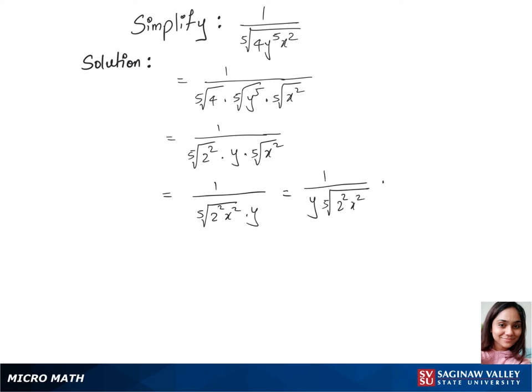And we are rationalizing this denominator by multiplying 5th root of 2 power 3 times x power 3 over 5th root of 2 power 3 x power 3.